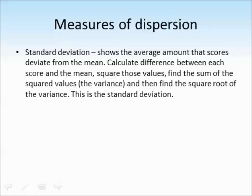Another measure of dispersion that you could use is standard deviation, which shows the average amount that scores deviate from the mean. To do this you would calculate the difference between each score and the mean, then square those values, and then find the sum of the squared values, which is called the variance. And then you would find the square root of the variance. And this is the standard deviation.